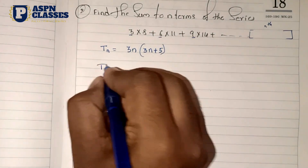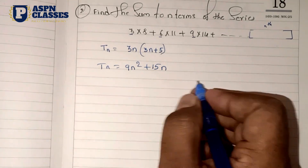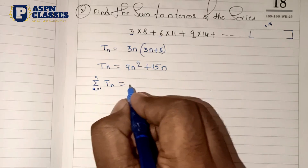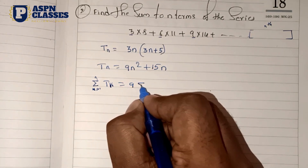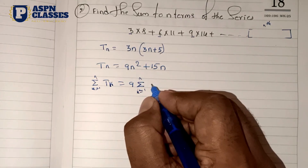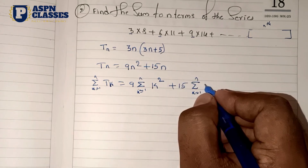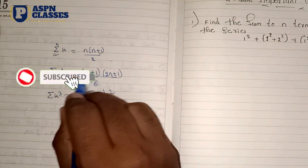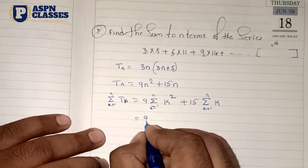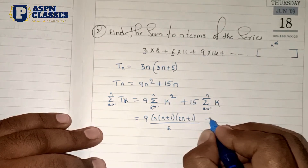So the nth term Tn = 3n + 5. That means Tn = 9n² (wait — 3×n gives 3n, and 3×5 gives 15n term). So we write the summation from k=1 to n of Tk. This requires the k squared formula: n(n+1)(2n+1)/6, plus 15 times the summation of k, which is n(n+1)/2. Now taking n(n+1) as a common factor, and 3 as a common factor.